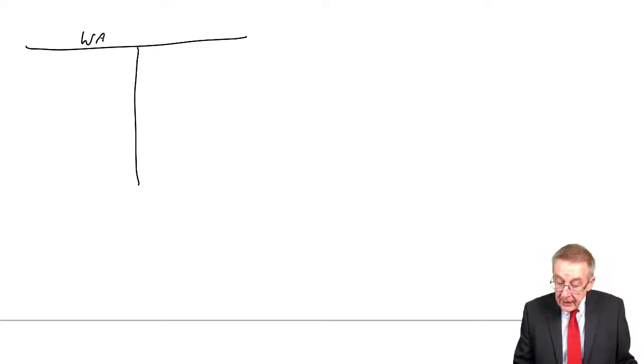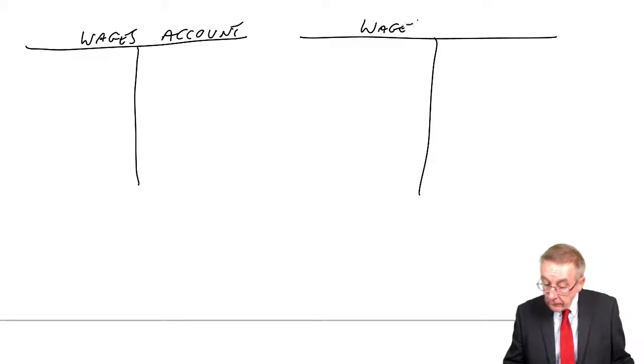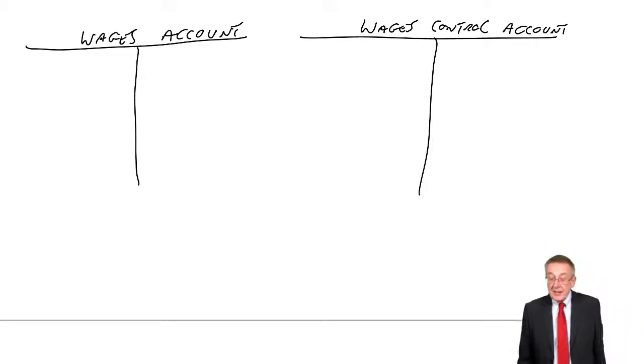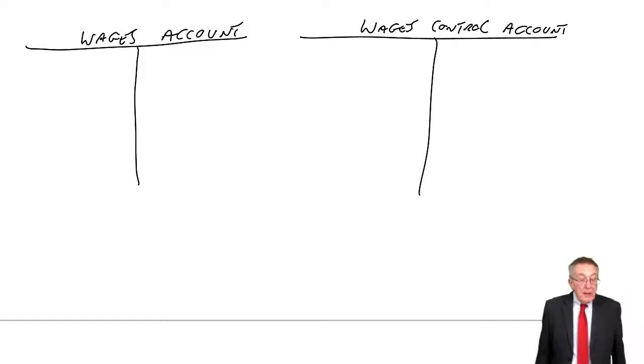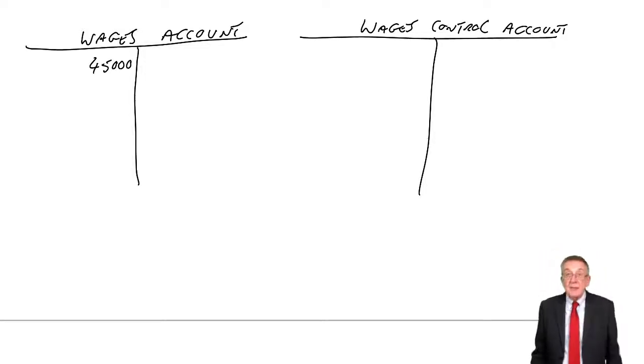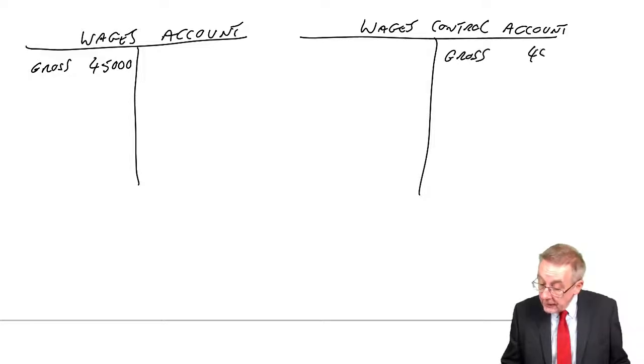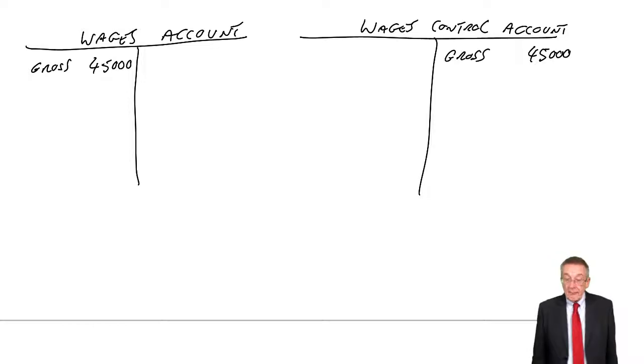Example two, record the following transactions in the wages control account and the wages account. So the wages account, as you'll see, is where we're going to show the expense. The wages control account is where we'll keep track of what's happening. First of all, on 31st of March, the gross wages are calculated as $45,000. And so the gross wages, we debit the wages account. It's an expense of employing these people, the gross wages. And we credit the control account. So we've recorded the expense of employing this person so far.